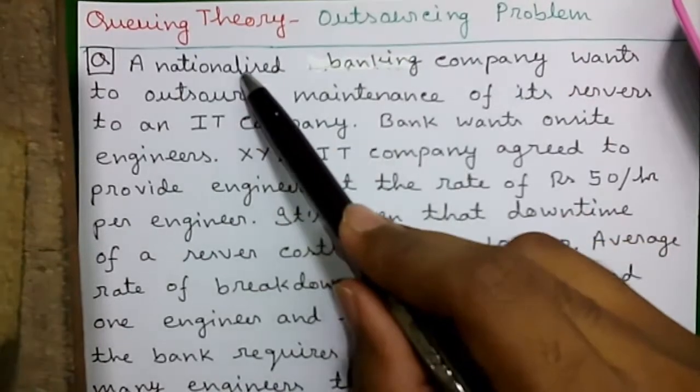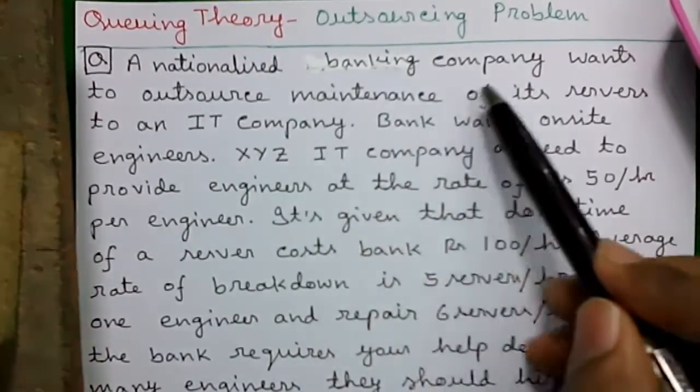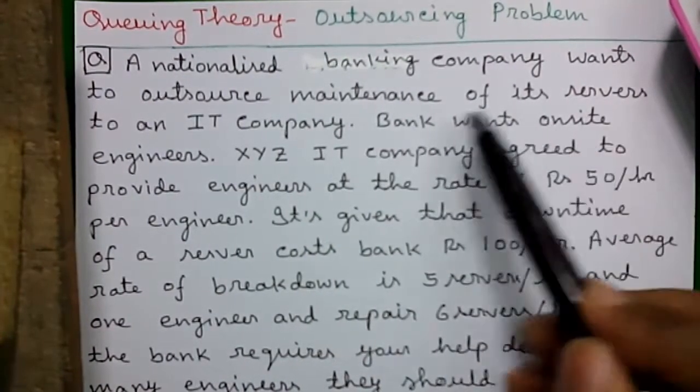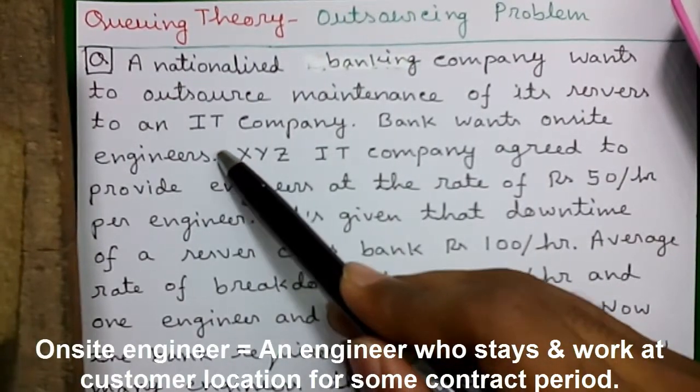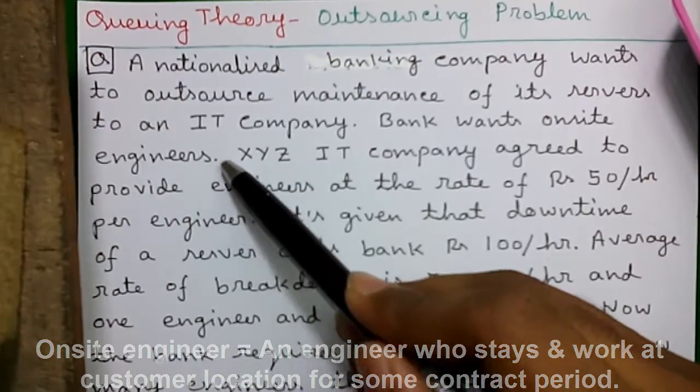Our question is: a nationalized banking company wants to outsource the maintenance of its servers to an IT company. The bank wants onsite engineers, meaning engineers will stay at the bank office and give service on demand.